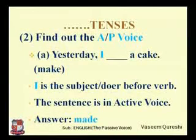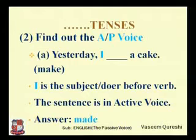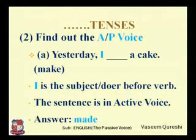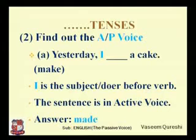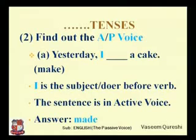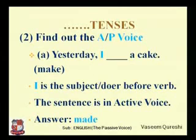The second thing you have to find out is whether the sentence is in active or passive voice. Here is one sentence: 'Yesterday I ___ a cake.' The verb 'make' is given in brackets. 'I' is the subject or the doer, and it comes before the verb, so the sentence is in active voice. As 'yesterday' is a keyword for simple past tense, the answer would be 'made.' So: Yesterday I made a cake.